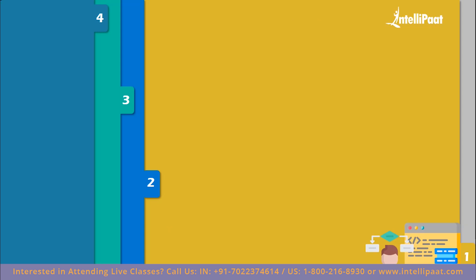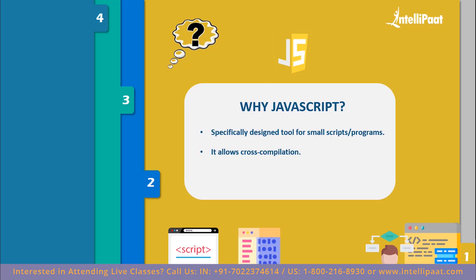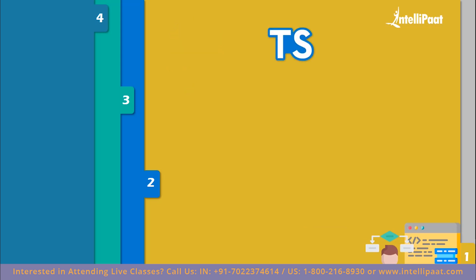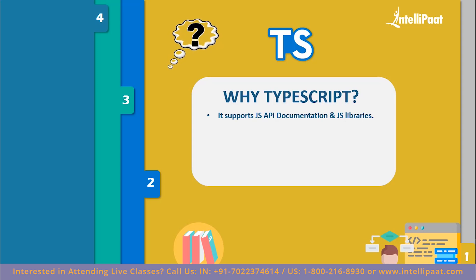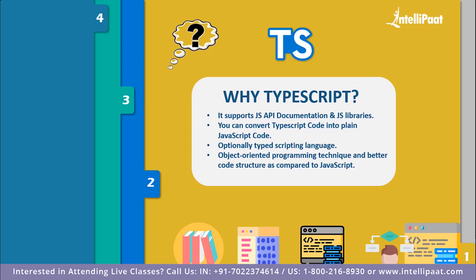Now let's discuss why you'd choose JavaScript or TypeScript. JavaScript is considered a design tool for small applications with a few lines of code — small scripts. You can compile and run JavaScript in any browser, and it also allows cross-compilation. You can also extend JavaScript to write larger applications. As for TypeScript, it is a superset of JavaScript that supports JS API documentation and JS libraries. You can convert TypeScript code into plain JavaScript. TypeScript is optionally typed, meaning you can add typing as needed. It has object-oriented programming techniques, better code structure, and also helps extend the language beyond standard decorators.